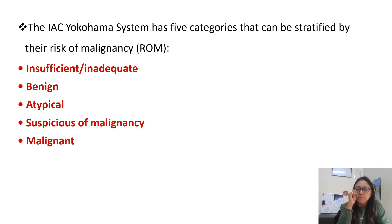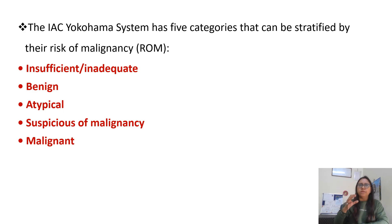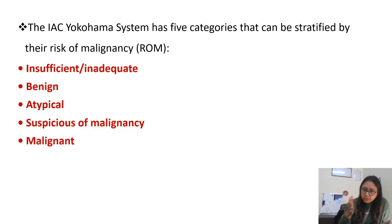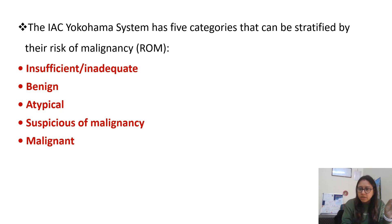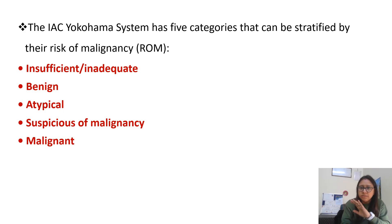The Yokohama system has divided breast cytology into five categories as per the risk of malignancy. These five categories are: first, insufficient or inadequate; second, benign; third, atypical; fourth, suspicious for malignancy; and fifth, frankly malignant.